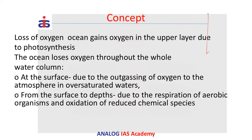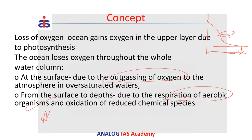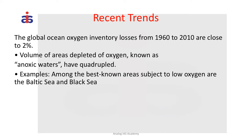If you take a look at the oceans, they are present in various layers. Water at each level has different levels of oxygen, and as we move towards the bottom, oxygen levels fall down. At the surface, we are losing oxygen because of outgassing, and as we move deeper, the respiration of aerobic organisms and the growth of algae in seawaters leads to depletion of oxygen levels. Oxidation of reduced chemical species also contributes. The oxygen inventory has fallen by at least 2% from 1960 to 2010.